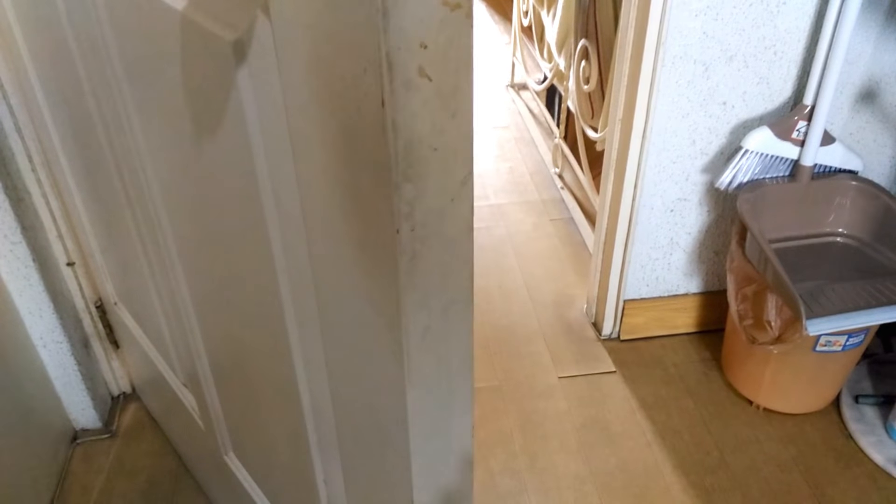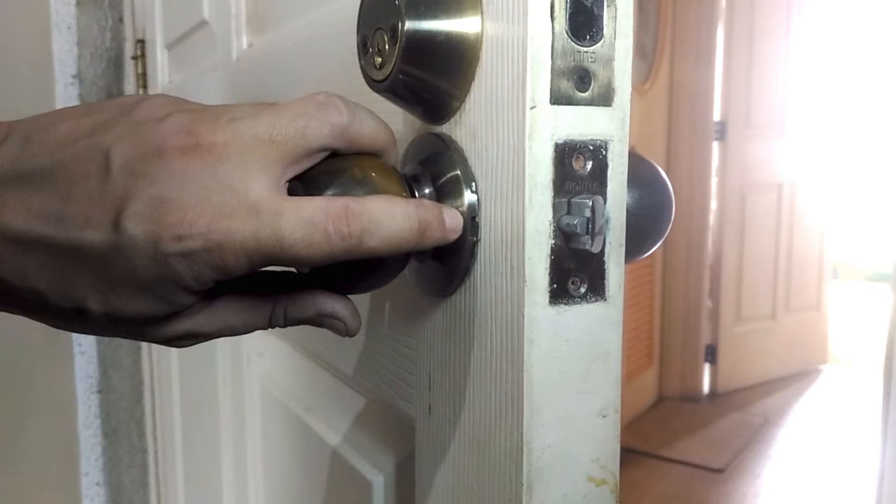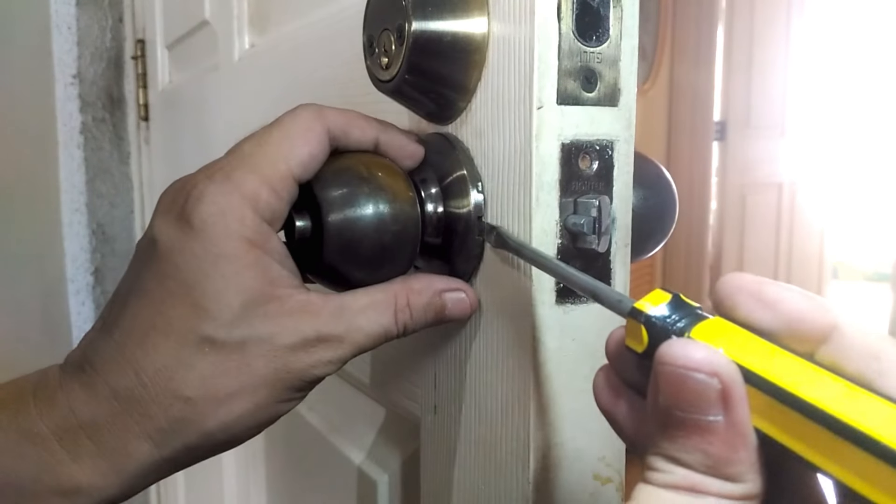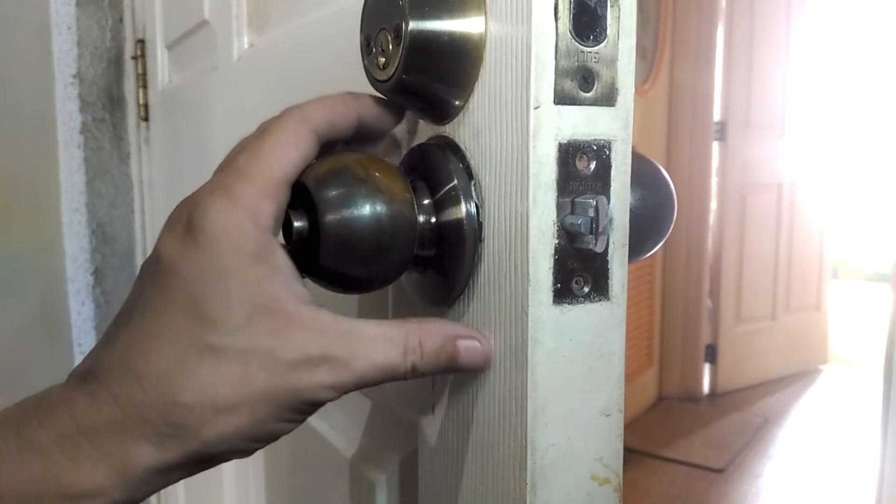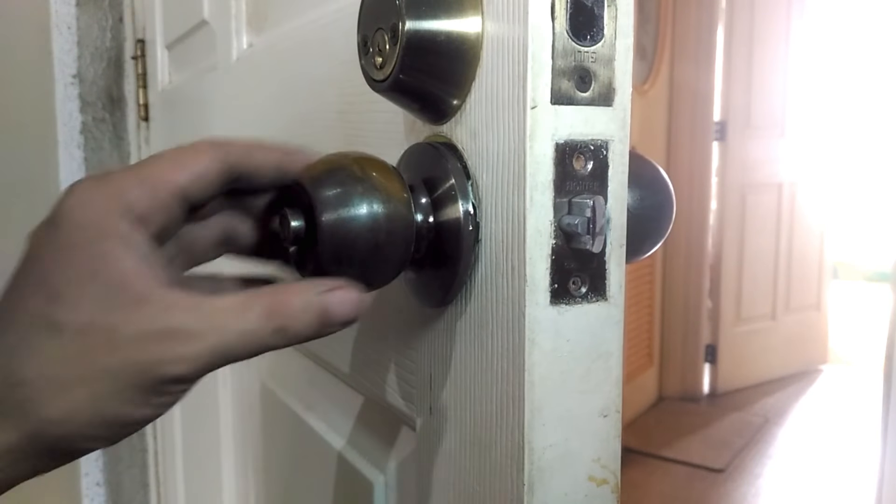Now we need to pull out the inside knob so we can later pull out the inside cover plate, technically known as a rose. This will allow us access to the screws on the mounting plate. Removing the rose is easy, just look for the small notch around it and pry with a flat head screwdriver. But like I said, we need to remove the inside knob first.